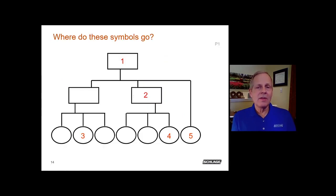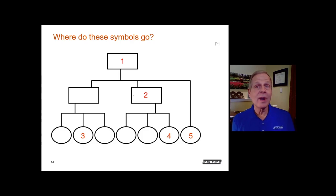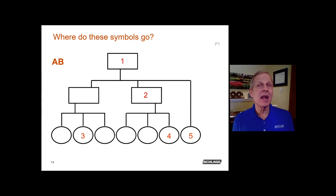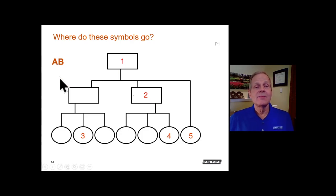Let's do a review to see if we can figure out where key symbols would go. For the symbol AB — double letters indicate some type of master key — it would go in the master key position, specifically as the AB master key in the schematic. This is distinct from the AA master key already placed in the adjacent position.